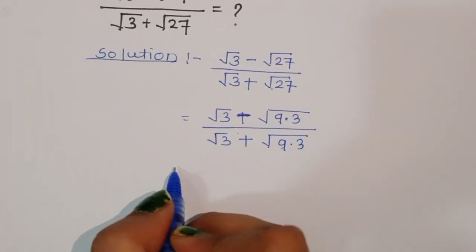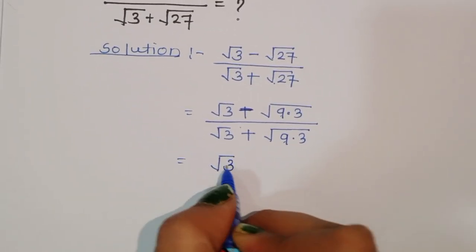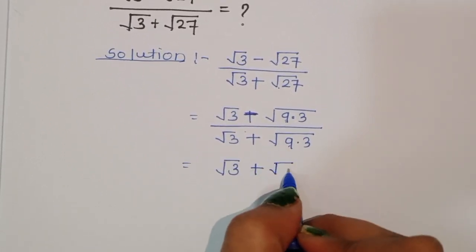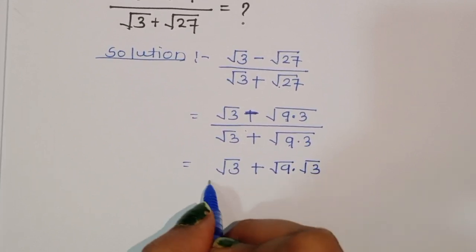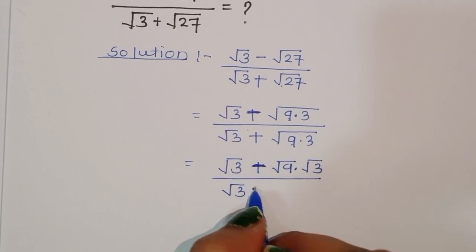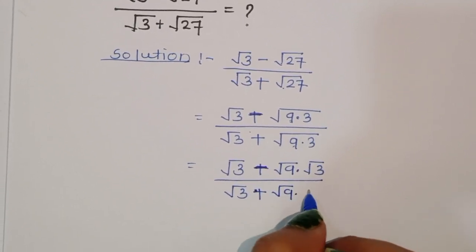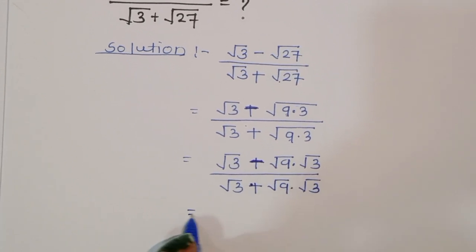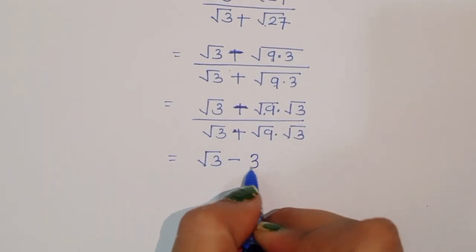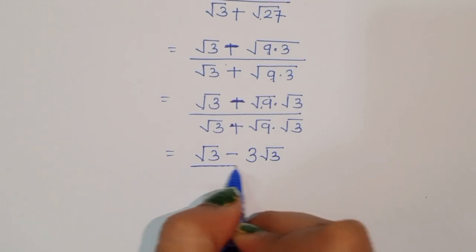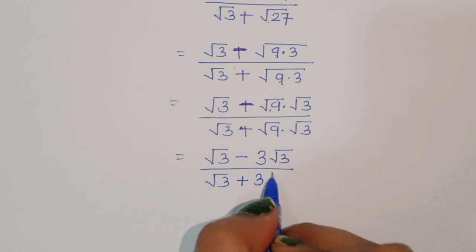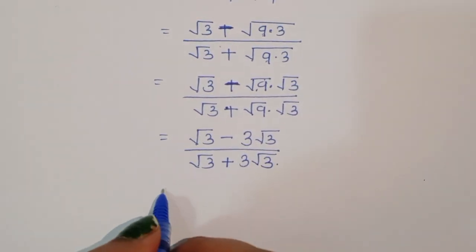Now we can separate square root of 9 times square root of 3. So the expression becomes: square root of 3 minus square root of 9 times square root of 3, divided by square root of 3 plus square root of 9 times square root of 3. Since square root of 9 equals 3, this gives us square root of 3 minus 3 times square root of 3, divided by square root of 3 plus 3 times square root of 3.